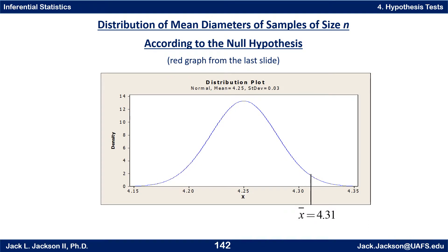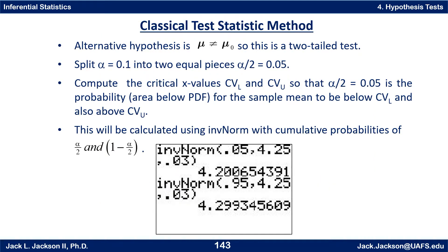Since the alternative hypothesis is mu ≠ mu-naught, this is a two-tailed test. In the classical critical value method, we take alpha = 0.1 and split it into two equal pieces, alpha/2 = 0.05, placing 0.05 in each tail. We want to find a lower critical value CV_L and an upper critical value CV_U — these are x-bar values such that the probability below CV_L equals alpha/2, and the probability above CV_U also equals alpha/2.